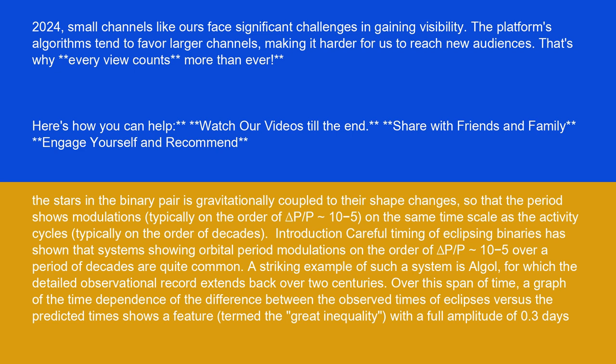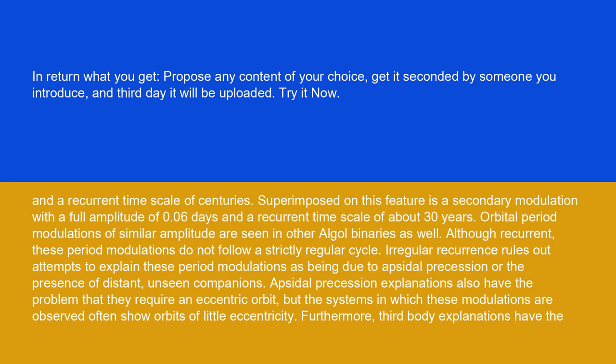a graph of the time dependence of the difference between the observed times of eclipses versus the predicted times shows a feature termed the Great Inequality, with a full amplitude of 0.3 days and a recurrent time scale of centuries.